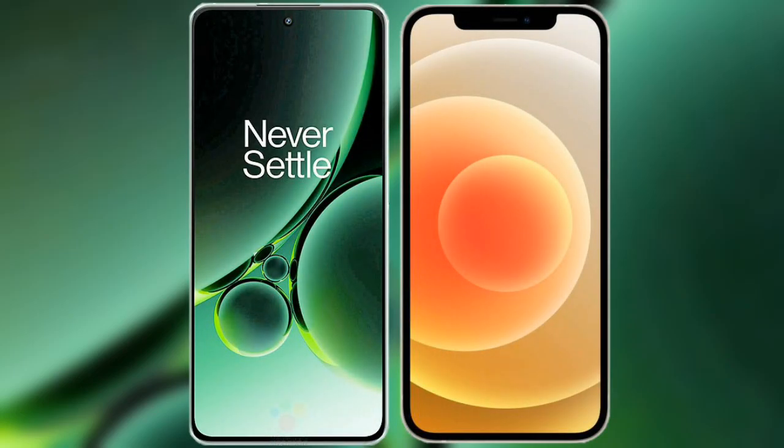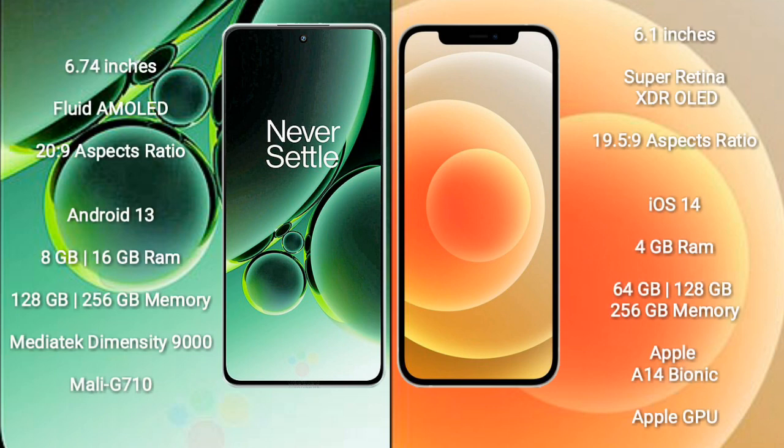I will compare the new OnePlus Nord 3 with iPhone 12. OnePlus Nord 3 comes with a 6.74-inch flat AMOLED display and aspect ratio 20x9. iPhone 12 comes with a 6.1-inch Super Retina XDR LED display and aspect ratio 19.5x9.